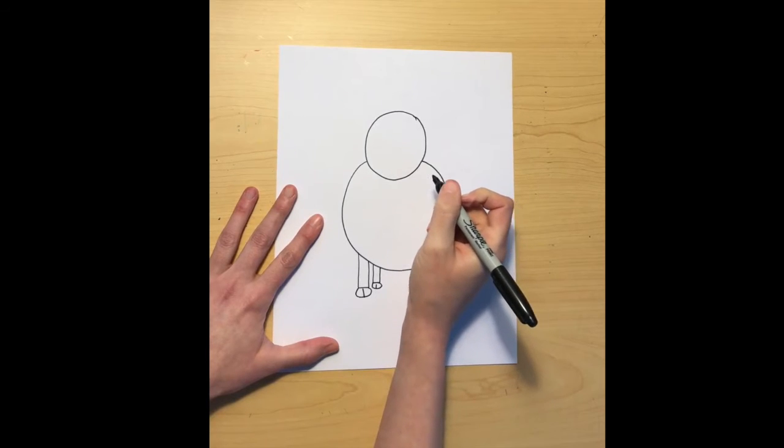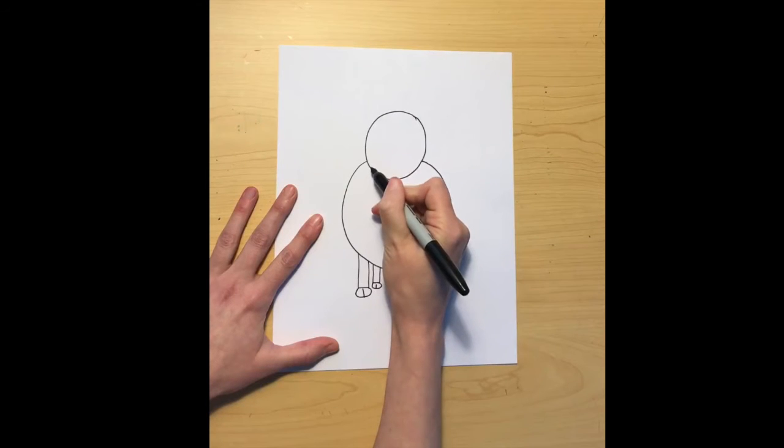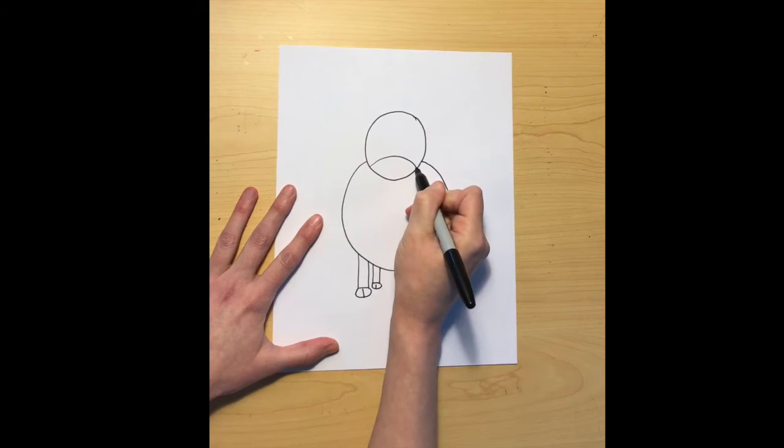Next let's add in our nose for our cow. On the rectangle we did a half circle underneath the rectangle. This time we want to put the half circle going the other direction inside this circle.